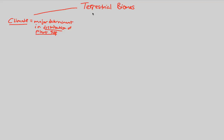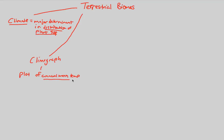Furthermore, when we have climate, we're going to have something known as a climograph — something we can literally graph based off of information collected from a terrestrial biome. In the climograph, we're going to be plotting two things: the annual mean (average) temperature, plus its relationship to precipitation in a particular area. That's how we establish a climograph: a plot of annual mean temperature plus precipitation.